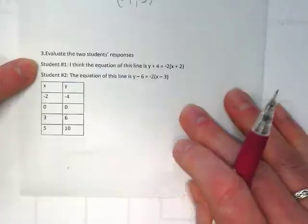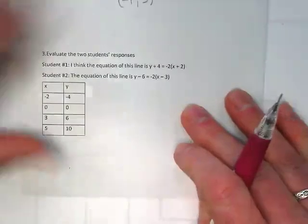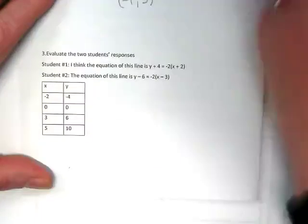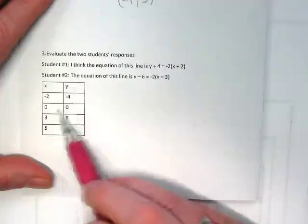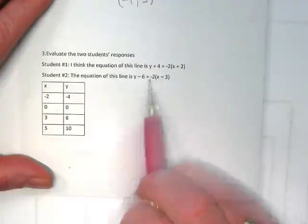For number 3, evaluate two students' responses. We want to look and see at a couple things. Did they get their points for this equation from the table of x, y pairs? And do they have the correct slope?